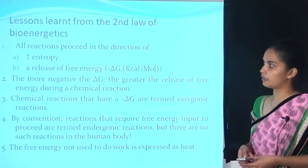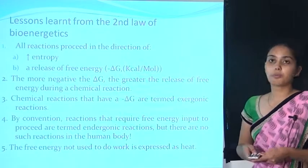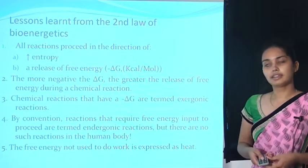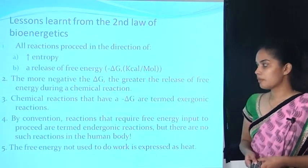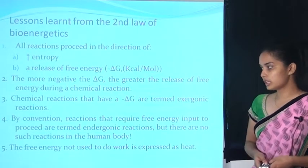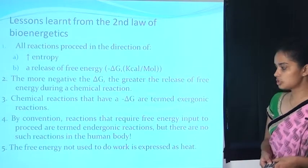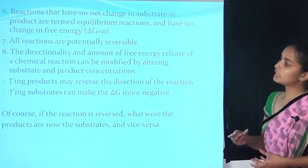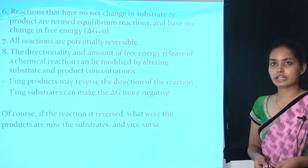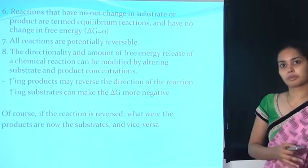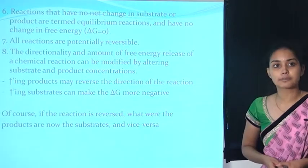Lessons learned from the second law of bioenergetics: All reactions proceed in the direction of increasing entropy and release of free energy. The more negative the delta G, the greater the release of free energy during a chemical reaction. Reactions with a negative delta G are termed exergonic reactions. Reactions that require free energy input are termed endergonic reactions. Free energy not used to do work is expressed as heat. Reactions with no net change in substrate or product are equilibrium reactions and have no change in free energy. All reactions are potentially reversible.